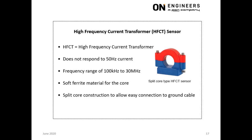This slide is about HFCT, or High Frequency Current Transformers. The HFCT will not detect currents at 50 Hz. Due to the material of the core, the frequency response of HFCT is from 100 kHz to 30 MHz. The common material for the core is soft ferrite. HFCTs are usually of split-core construction to facilitate connection to any existing ground cable.